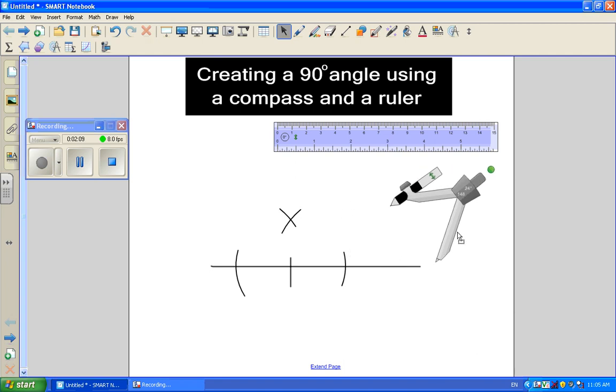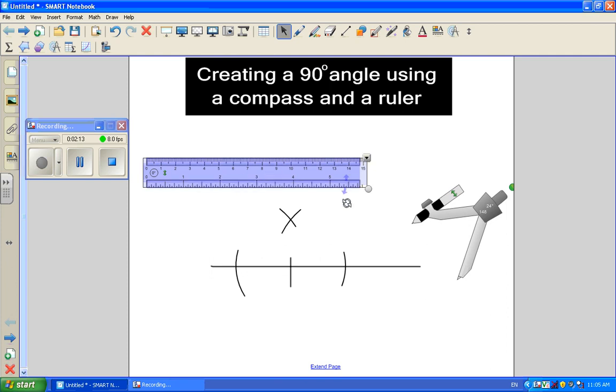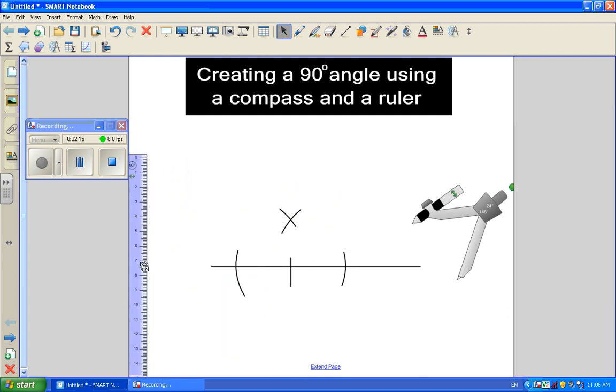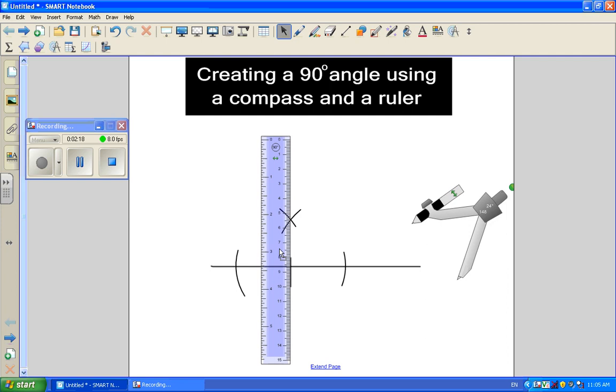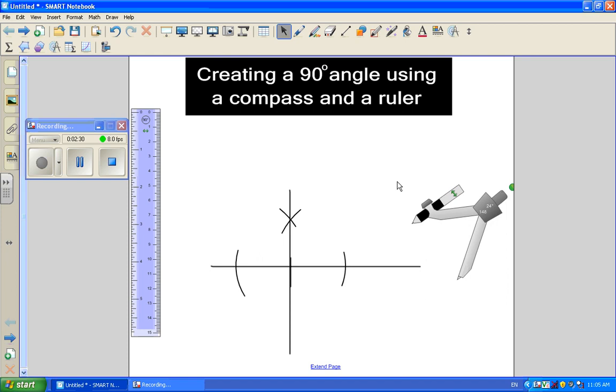Once we've created those, it's just a matter of grabbing our trusty ruler and connecting the intersecting point of our arcs that we've drawn with our initial line. And there you have it. We've created a 90 degree angle. I'll just label it. 90 degree angle intersecting at the spot that we chose.